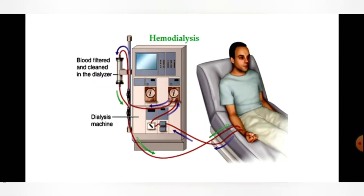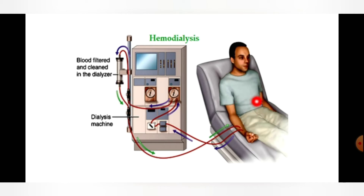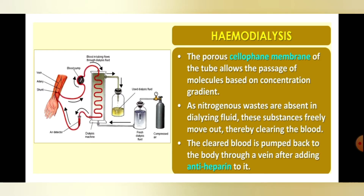From the artery, blood goes into the dialysis unit where purification happens. The purified blood then goes back to the patient's body through a vein. The porous cellophane membrane of the tube allows passage of molecules based on the concentration gradient.